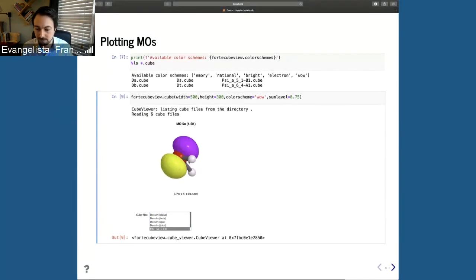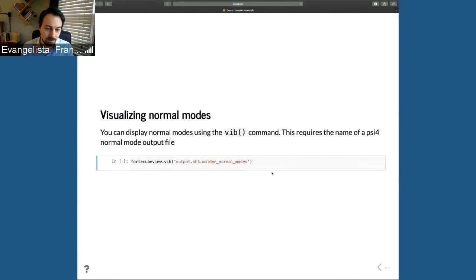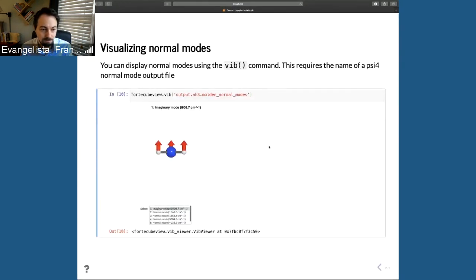Here's how we visualize vibrational frequencies. You need to get a Molden normal mode file, and here's ammonia for example. You see the imaginary mode for the umbrella bend, and that shows the arrows on top of the atoms. You can see those are all elements of the renderer that I showed before. Now I'm going to stop sharing here and I'm just going to end my talk with just a couple of extra points.